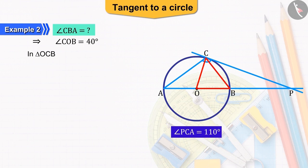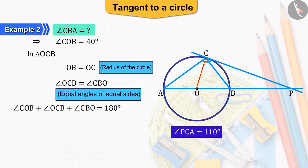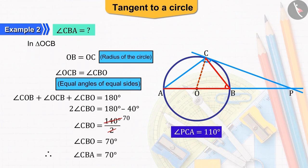Now, we can see in triangle OCB that the sides OB and OC are equal being the radii of the circle. Due to which, the opposite angles are also equal. The sum of all the angles of a triangle is 180 degrees. Due to which, angle CBO equals to 70 degrees. Which we can also write as angle CBA.